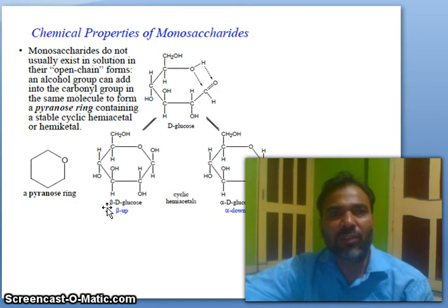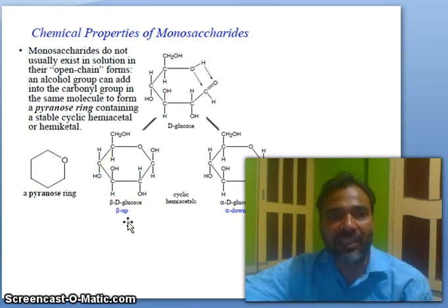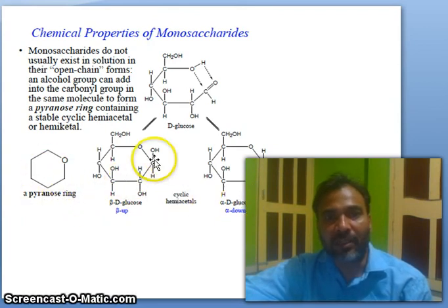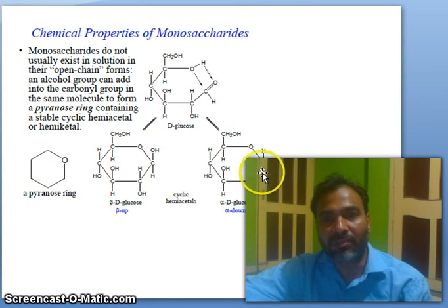Monosaccharides do not usually exist in solution in their open-chain forms. An alcohol group can add into the carbonyl group in the same molecule to form a pyranose ring, containing a stable cyclic hemiacetal or hemiketal. This is the pyranose structure, which is heterocyclic. Beta is up and alpha is down — these are the positions.